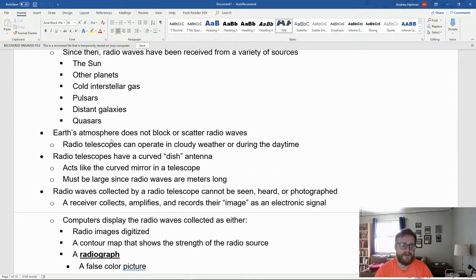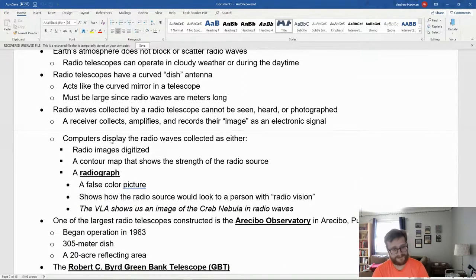The big thing that allows us to use radio astronomy is that Earth's atmosphere doesn't block or scatter radio waves because they are so large. Radio telescopes can operate in cloudy weather or during the daytime. Radio telescopes have a curved dish antenna and must be very large because of the length of radio waves. Radio waves collected cannot be seen, heard, or photographed, so a receiver collects, amplifies, and records these images as an electronic signal. Computers display them as a radio image digitized, a contour map showing the strength of the radio source, or a radiograph—a false color picture showing how the radio source would look to a person with radio vision.